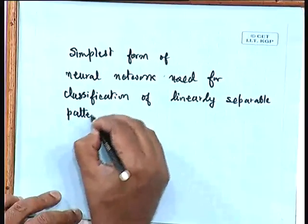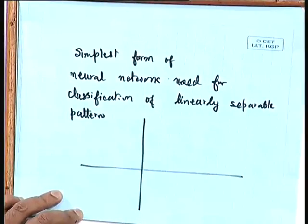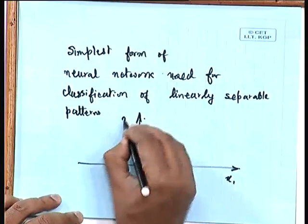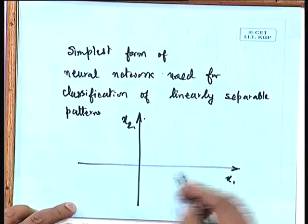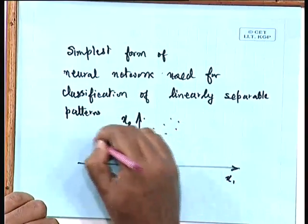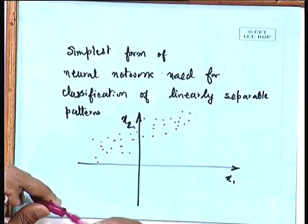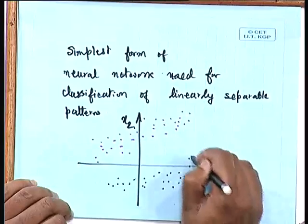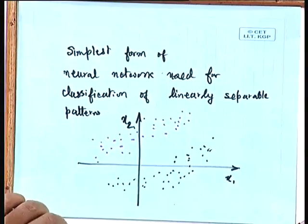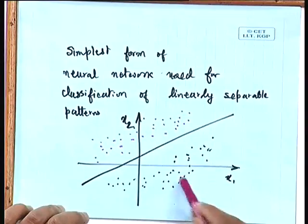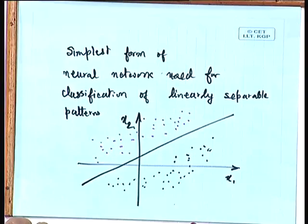That means, let us consider a two-dimensional space — our most simplified example — supposing we have the space as x1 and x2, a two-input perceptron. We have a set of patterns: these are one group of patterns, and these are another group of patterns. It is very clearly linearly separable, because we can find one straight line which is going to distinguish between these two categories of patterns.